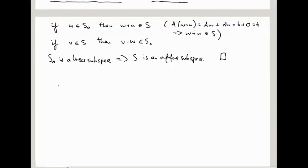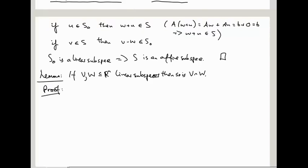I don't want to say too much more about subspaces because you'll see a lot more about them in future courses on linear algebra. I just want to give you another example of a nice thing that's true about subspaces, which you can prove immediately from the definition. So, if V and W are linear subspaces, then so is V intersect W. This is also true for affine subspaces, of course. Just think about it.